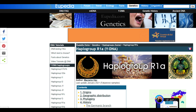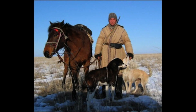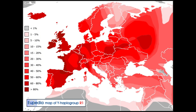Haplogroup R1a, Y-DNA, sourced from Eupedia. Amerind R1, shown in red, spread genes for light skin, blonde hair, and red hair. When a group like R1 has emphasis on Iceland and the western parts of Great Britain, this is already an indication it is Amerind and came through the North Atlantic route.